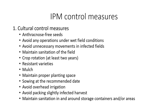IPM Control Measures: Management of the pathogen can be done through a combination of various management measures. Cultural control measures include: use of anthracnose-free seeds; avoid operations under wet field conditions; avoid unnecessary movements in the infected field; maintain field sanitation; practice crop rotation for at least 2 years; use resistant varieties; mulch; maintain proper spacing; sow at the recommended date; avoid overhead irrigation; avoid packing slightly infected harvest; and maintain sanitation in and around storage containers.